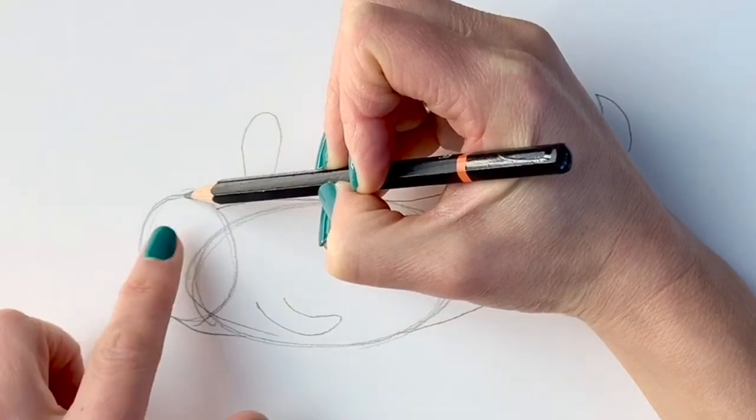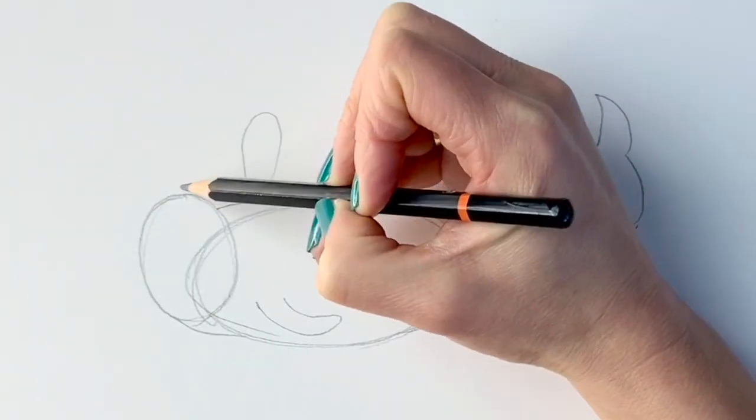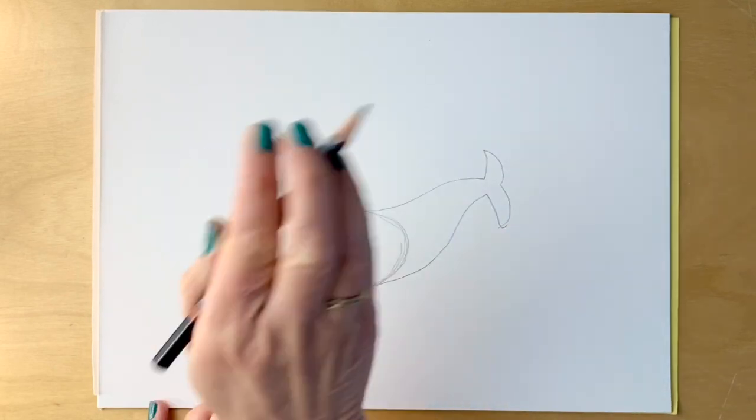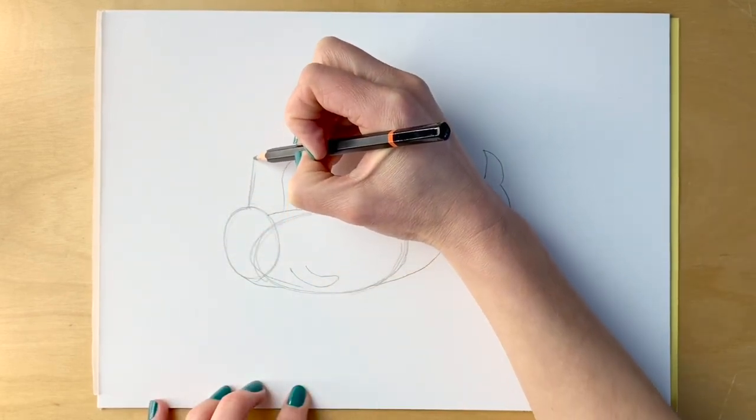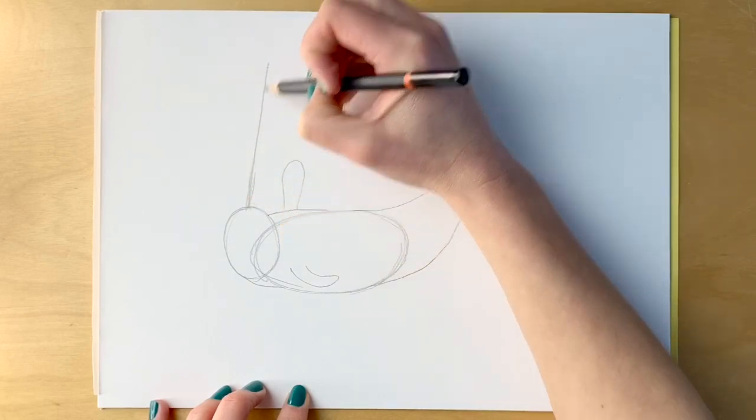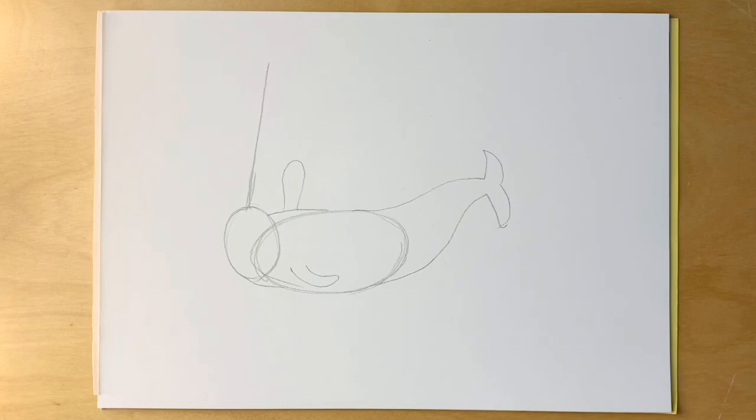Now, I'm going to be drawing the tusk, so this is going to be coming straight up like this, just at an angle to the right. You don't have to use a ruler. And that's our preparatory stage.